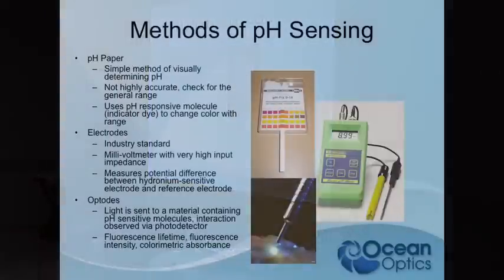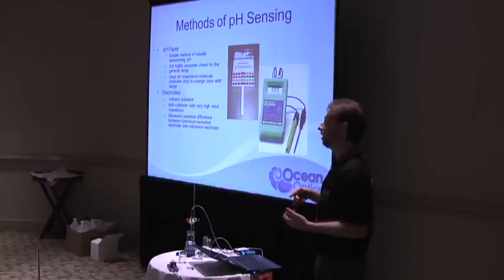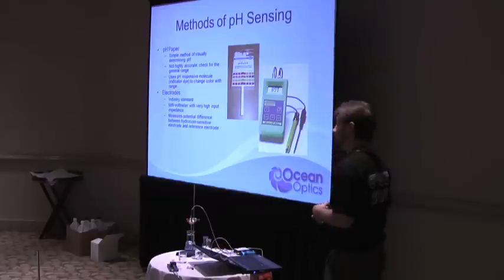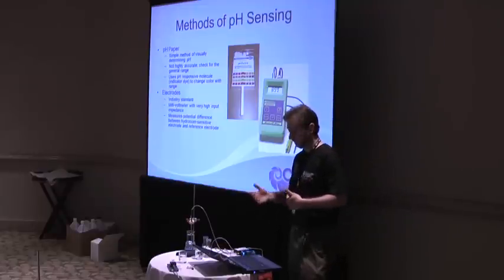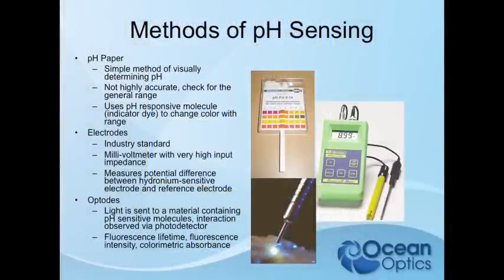So, methods of pH sensing. Everyone's probably most familiar with pH paper — just a dye embedded in paper for a quick general check to match colors and get a rough range. Electrodes are the industry standard, essentially just a voltmeter looking at the potential difference between some reference. And then optical — which is what we're doing — sending light to some chemistry that is pH-reactive, interacting with it, and sending that light back to a detector to correlate to pH.